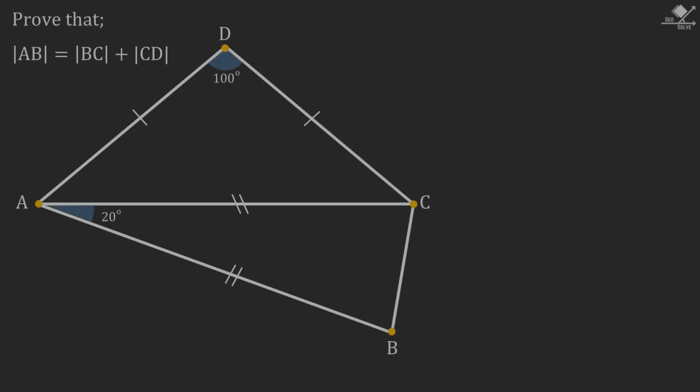For the given angles and equities we have to prove that the length of the line segment AB is equal to BC plus CD. We will have four different solution methods for this problem and let's start with the first one.